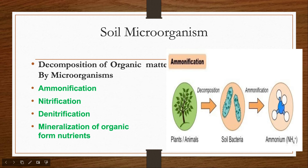Denitrification is a process in which nitrate is converted into nitrogen gas. Pseudomonas and Bacillus bacteria are involved in this process. Mineralization converts organic nutrients into inorganic form. Autotrophic bacteria in soil oxidize certain nutrients into plant-available form — for example, microorganisms oxidize sulfur into sulfate, which is plant-available. Microbes also mineralize organic phosphorus into plant-available phosphorus.